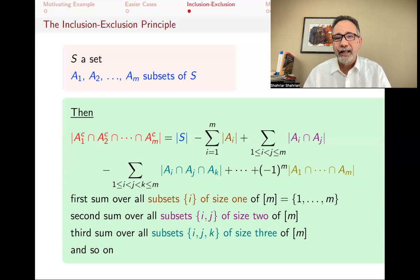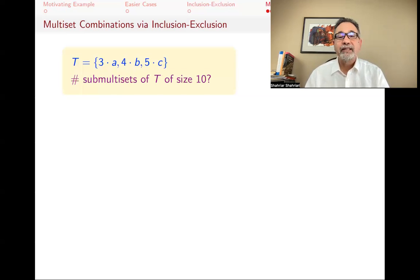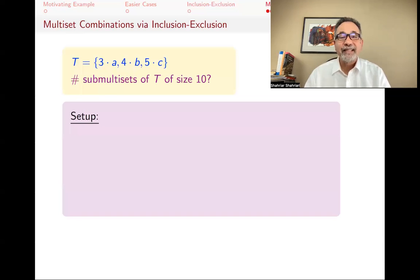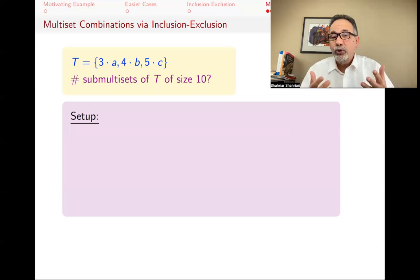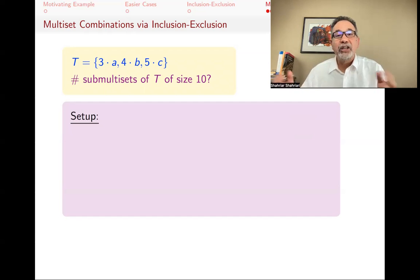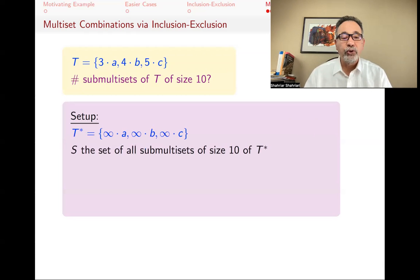Let's go back to our problem and solve it, and in so doing you will see how to solve all problems of this type. We have T, a multiset with three types of elements and repetition numbers 3, 4, and 5, and we want the number of sub-multisets of T of size 10. The setup with inclusion-exclusion is to define the ambient set S and subsets A1, A2, A3. We start with T-star, a multiset with infinite repetition numbers and the same three types. S is the set of all sub-multisets of size 10 of T-star.